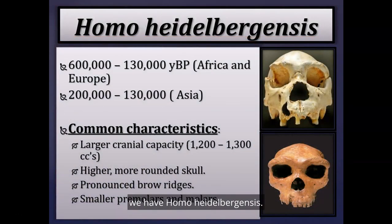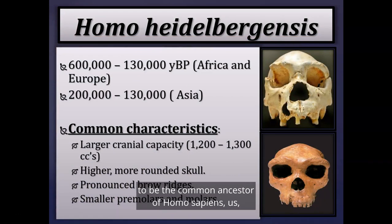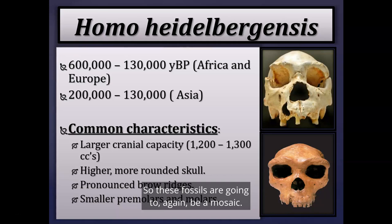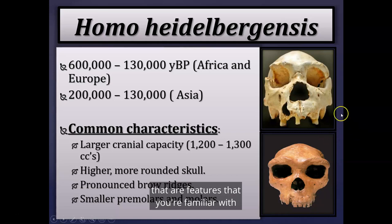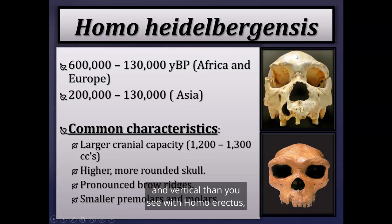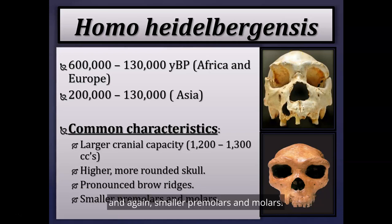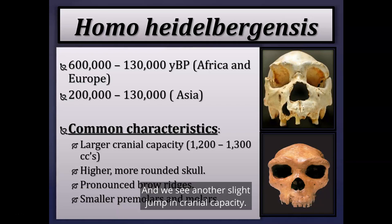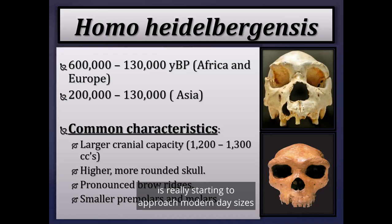After Homo erectus, we have Homo heidelbergensis, generally considered the common ancestor of both Homo sapiens and Homo neanderthalensis. These fossils again show a mosaic of features — pronounced brow ridges and a relatively long, low cranial vault (though more rounded and vertical than Homo erectus), smaller premolars and molars, and another slight jump in cranial capacity. With Homo heidelbergensis, cranial capacity is approaching modern day sizes at about 1200 to 1300 cc.